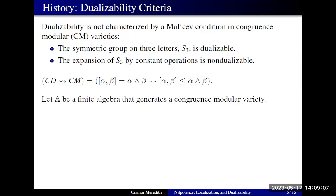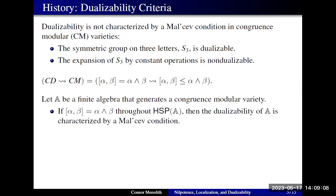A few examples of what we know about dualizability in the congruence modular setting. First of all, if you have an algebra that generates a congruence modular variety whose commutator is the meet — i.e., neutral — it turns out that your variety is just distributive again, and we have our near-unanimity characterization that we already looked at.